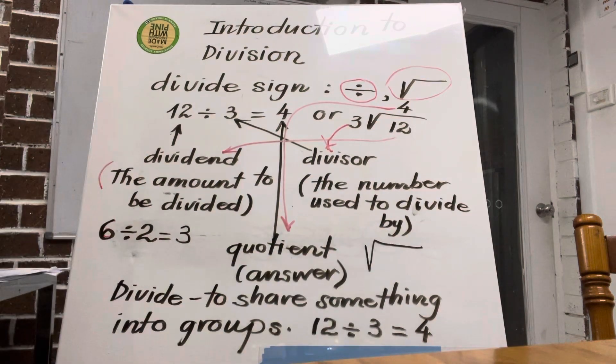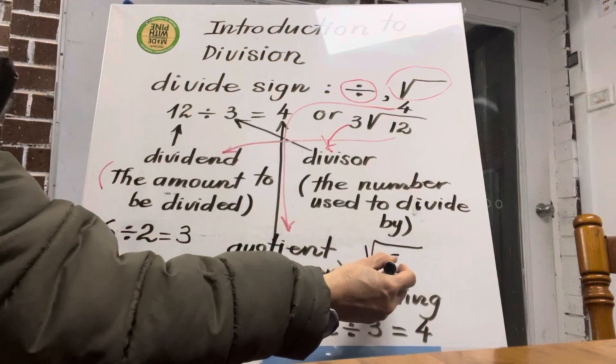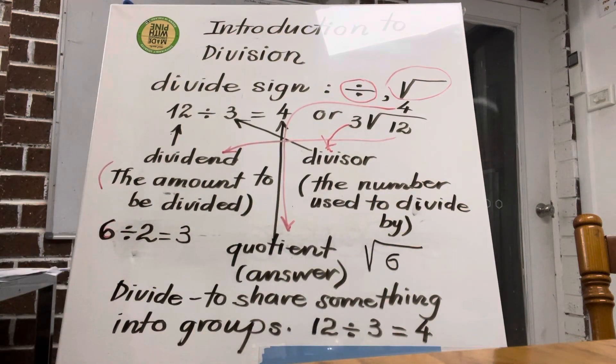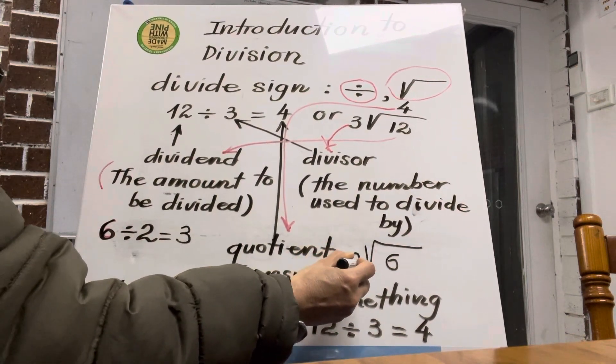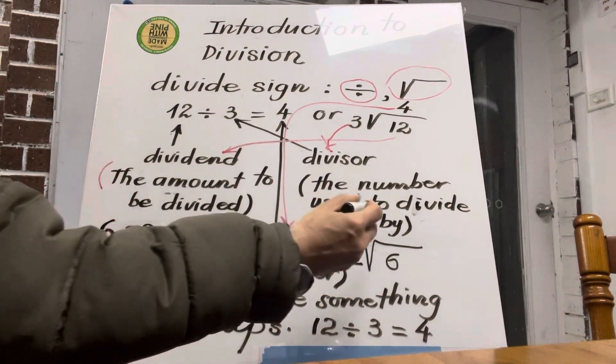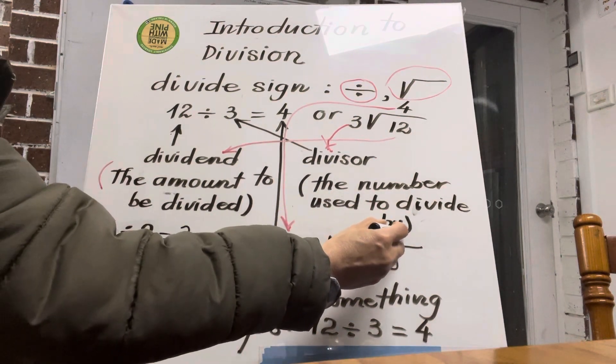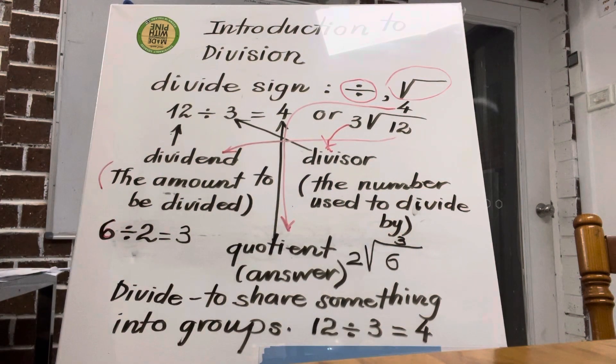So first I do this side first, and what do I do next? I have to write the dividend down here, yes or no? And where do I write the divisor? On the left side. So this is the divisor, and where do I write the quotient, the answer? On top of the dividend. So I write it here. Now do you understand?